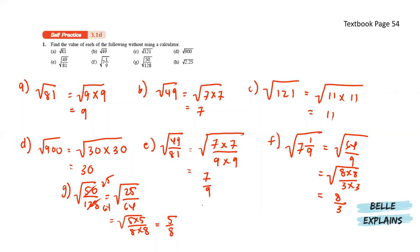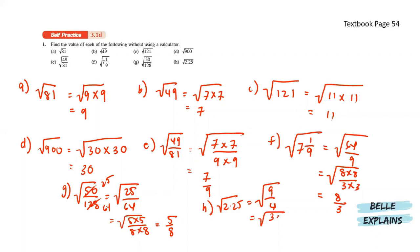And lastly for H, we have the square root of 9 and 9 over 4. So that will give us the square root of 3 times 3 over 2 times 2 and that will give us 3 over 2.